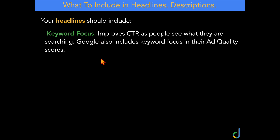First, you need to make sure that your headlines have a keyword focus. This is so important because it improves your click-through ratio as people see what they are actually searching. Google also includes keyword focus in their ad quality scores. So by adding keyword focus to your headlines, you not only increase the chances of people clicking your ad, but it also puts downward pressure on your cost per click because your ads have a higher ad quality rank from Google.